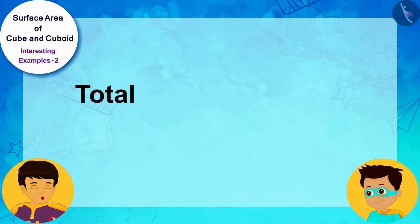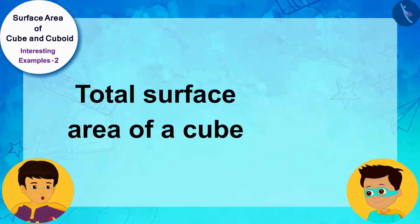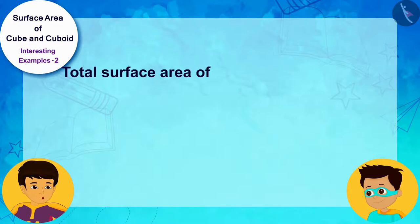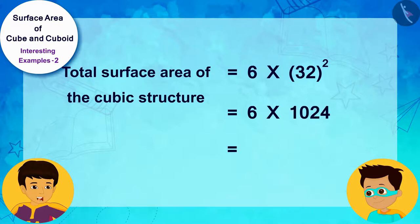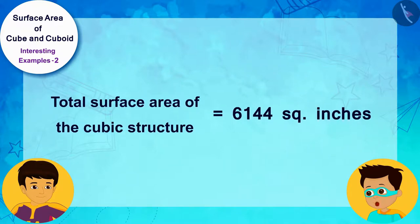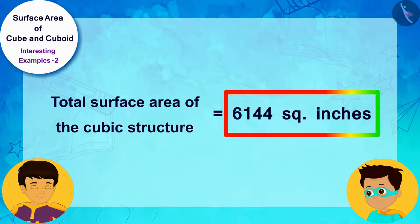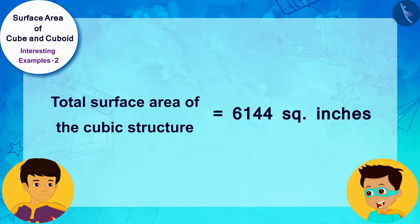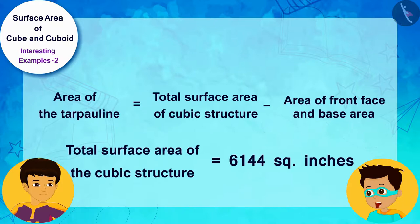Yeah, good. The formula for the total surface area of a cube is six times the square of the measurement of the sides of the cube. Let me quickly find the total surface area of this cubic structure by putting 32 inches as the side of this cube. Look Thomas, by solving it in this way we can see that the total surface area of your cubic structure is 6144 square inches.